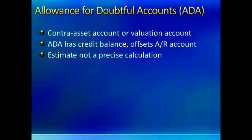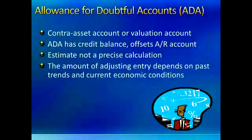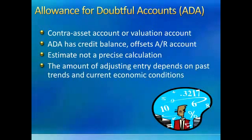In the Allowance for Doubtful Accounts, we're not identifying specific customers that we think won't pay, but of the total group of customers that have promised to pay, we're estimating some percentage won't actually pay. The amount of the adjusting entry to record the Allowance for Doubtful Accounts depends on past trends and current economic conditions.